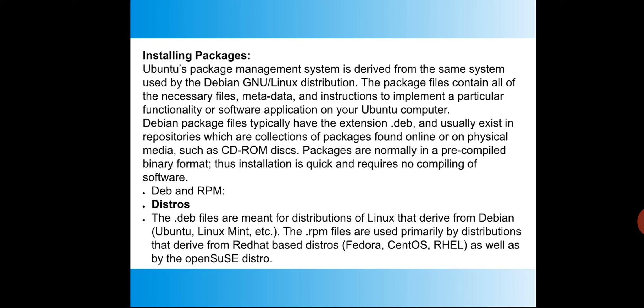Packages are normally in a pre-compiled binary format, so installation is quick and requires no compiling of software. This is somewhat similar to bytecode in Java. There are two main package types — deb and rpm. .deb files are meant for distributions derived from Debian, such as Ubuntu, Linux Mint, Deepin, Zorin, Lubuntu, and Kubuntu. All these operating systems share the same .deb package format.